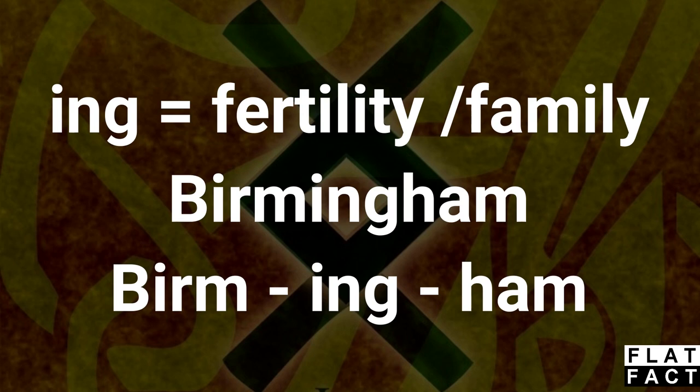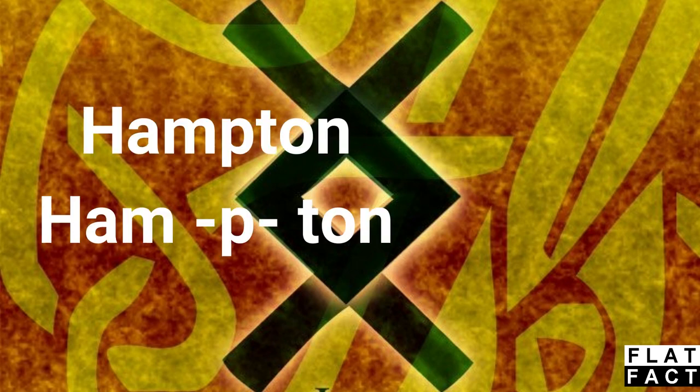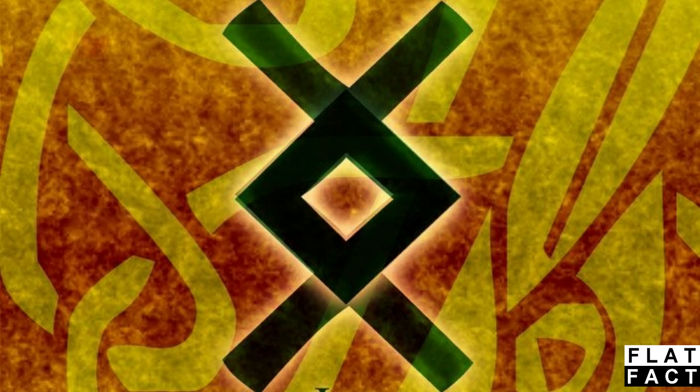When we dissect Birmingham, we see ham, family, and berm. Berm is an olden term for describing land. They also use the word acre, hundred, and ton. Like hampton. The ton of ham, or the land of the family ham again.